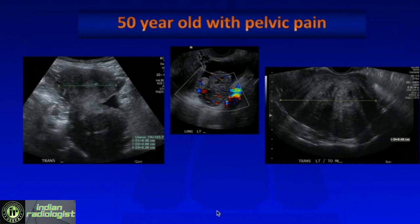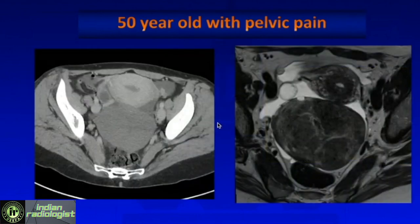This is a 50-year-old with pelvic pain — she's a little old, as ovarian torsion usually affects a slightly younger patient. She had this solid mass in the cul-de-sac. It's a hypoechoic mass with shadowing, so it looks like a fibroma, but its position in the cul-de-sac is somewhat unusual. Here again is the twisted pedicle. She also had a CT and MRI, and there's a little bit of fluid — which is always a reason to think this could be torsion. What she had was a torsed ovarian fibroma, which had infarcted.